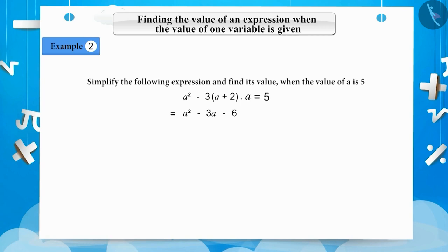Substituting a equals 5 in this expression, we get 5² - 3 × 5 - 6 = 25 - 15 - 6 = 25 - 21 = 4. The solution to this is 4.